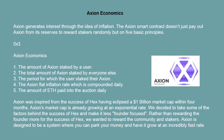The 5 principles are: 1. The amount of Axion staked by a user. 2. The total amount of Axion staked by everyone else. 3. The period for which the user staked their Axion. 4. The Axion flat inflation rate, which is compounded daily. 5. The amount of ETH paid into the auction daily.